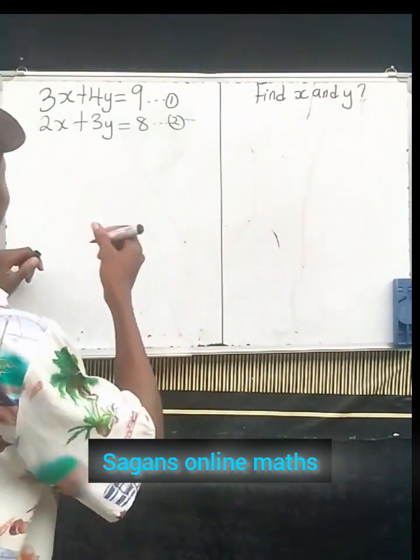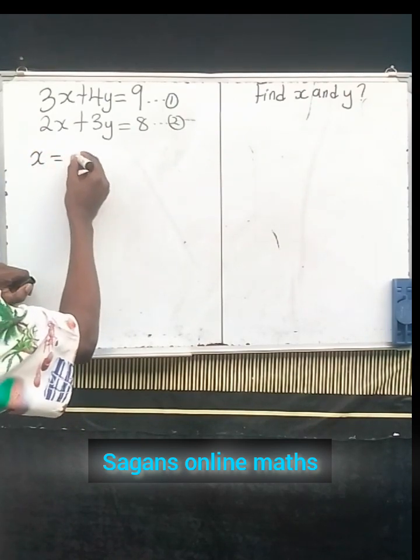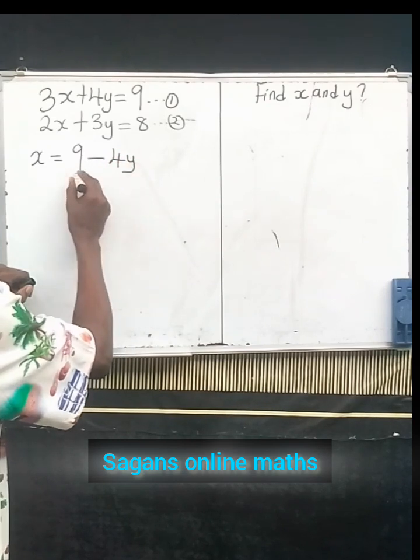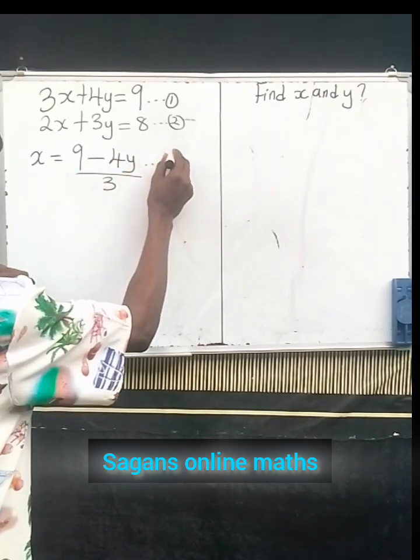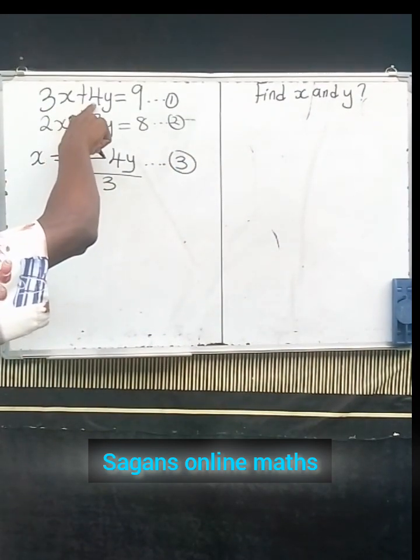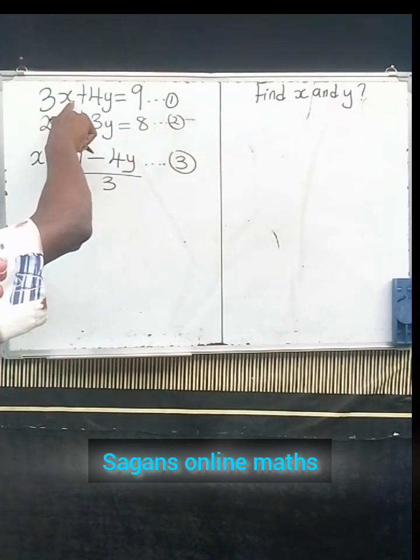Now from equation 1, let me edit the formula. We now see that our x will be equals to (9 - 4y) divided by 3. I can call this equation 3, because from here I already make a decision. I transferred 4y to the right-hand side, that's why I have negative 4y, then I divide both sides by 3.